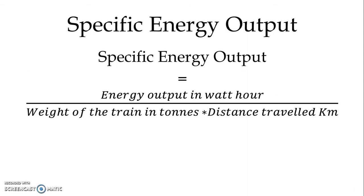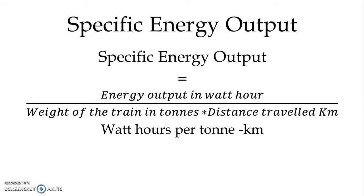Specific energy output is a ratio of energy output in watt hours to weight of the train in tons and distance travelled by the train in km. The unit for specific energy output is watt hours per ton km.